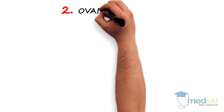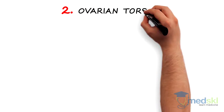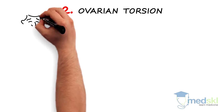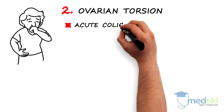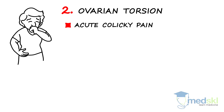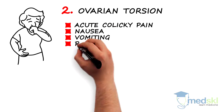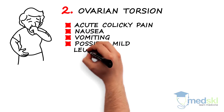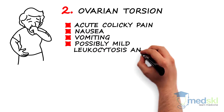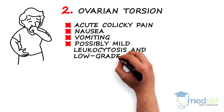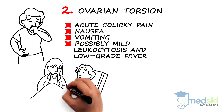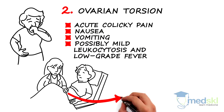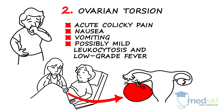Number two: ovarian torsion. Think of this if your patient has acute colicky pelvic pain with nausea and vomiting. It can be associated with a mild leukocytosis and low-grade fever. A pelvic exam will reveal an adnexal mass.